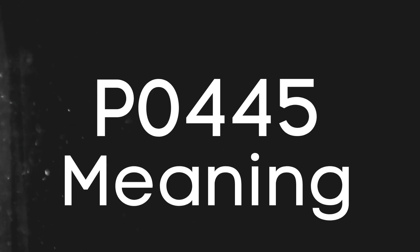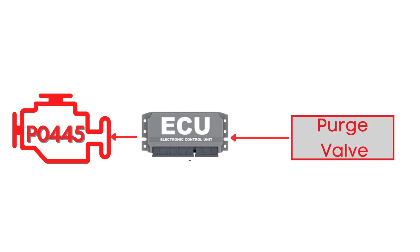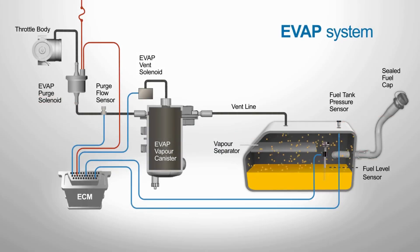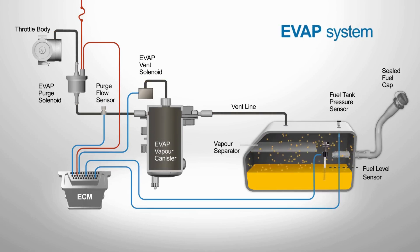First things first, let's break down what the P0445 code actually is. This code gets triggered when the PCM, or powertrain control module, detects a problem in the circuit that controls the purge valve in the EVAP system. The EVAP system is designed to prevent fuel vapors from escaping into the atmosphere, and the purge valve plays a crucial role in this process.